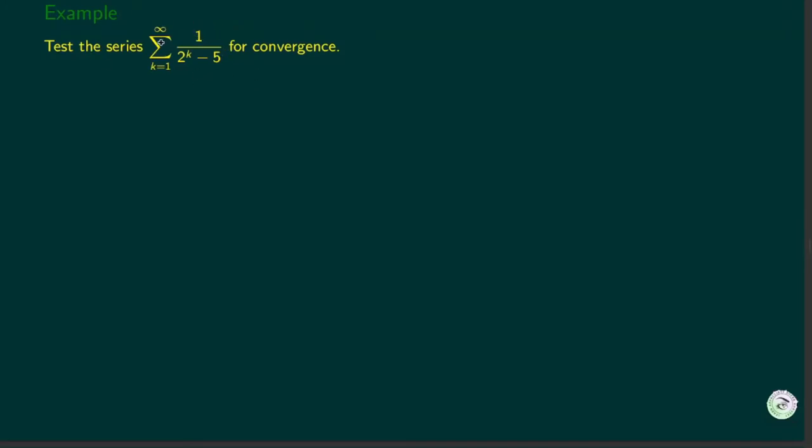This series we discussed before is convergent. Using limit comparison test, first we label this series by ak, and we know when k is large it looks like bk. So we will label bk to be this geometric series.